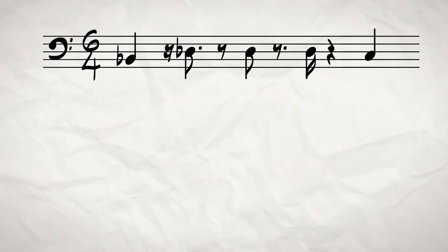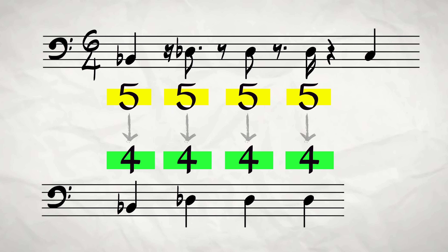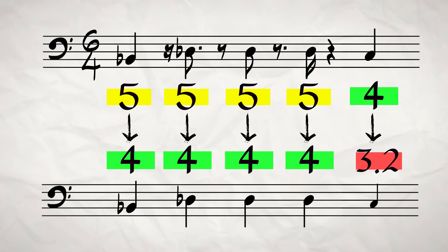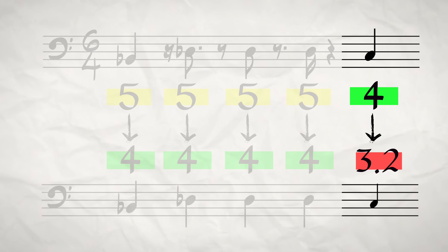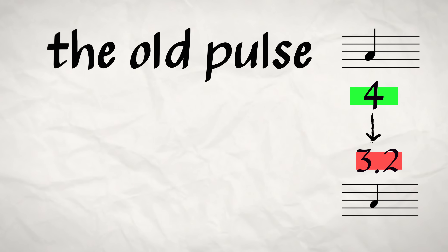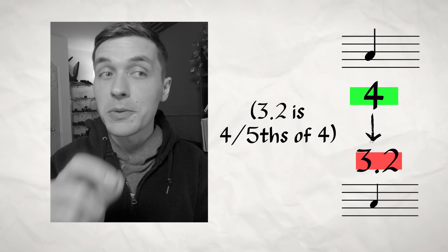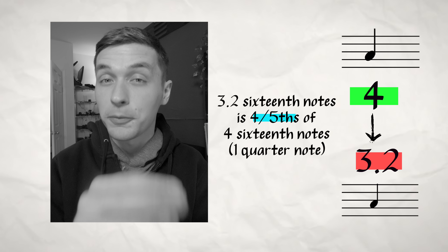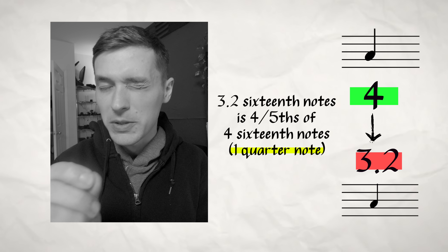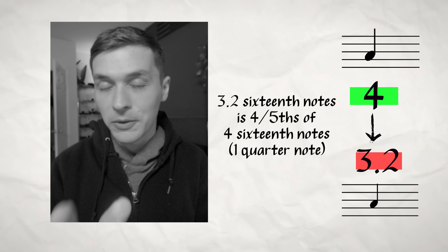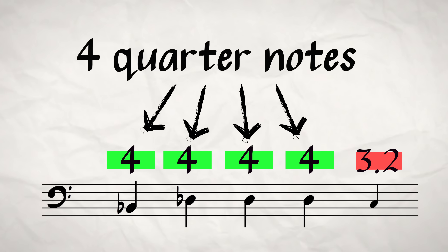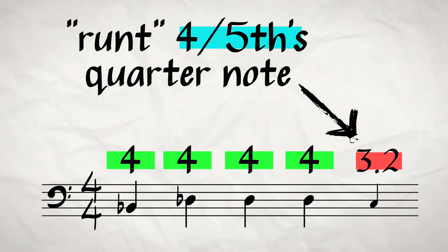Okay, we're getting to the 4/20 bit, I promise. If five sixteenth notes in the old tempo equal a quarter note in the new tempo, then a quarter note from the old tempo will equal four-fifths of a quarter note in the new tempo. That last note in the original riff was a quarter note, so that means in the new tempo it equals like four-fifths of the quarter note — kind of strange. Just to clarify what you're seeing on the screen: 3.2 sixteenth notes is four-fifths of four sixteenth notes, which is a quarter note. So 3.2 is four-fifths of a quarter note. It looks strange — just go with me on this. So now we have four evenly spaced pulses in the new tempo, kind of like a measure of 4/4, but with four-fifths of a note left over. How do we deal with that?